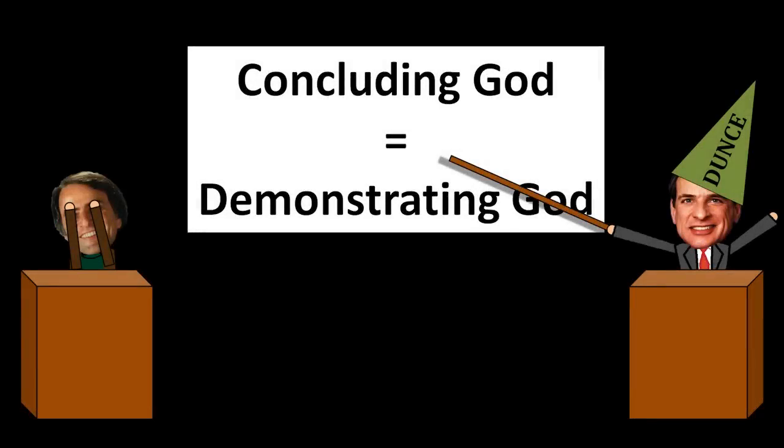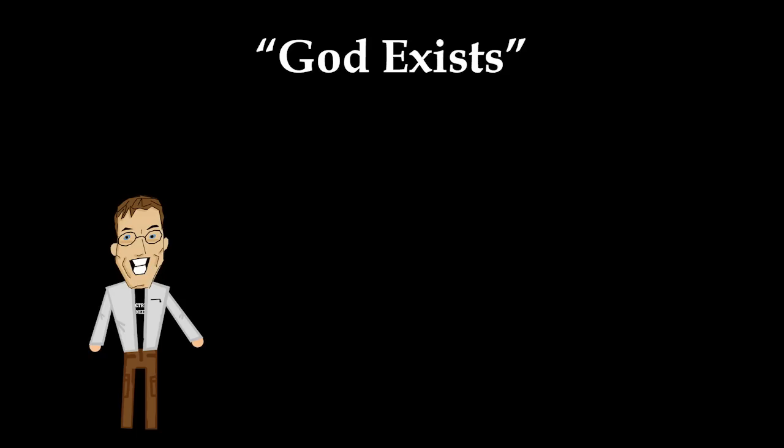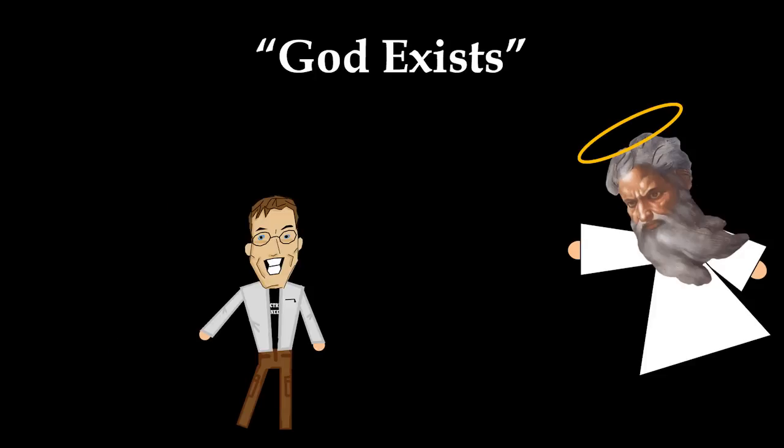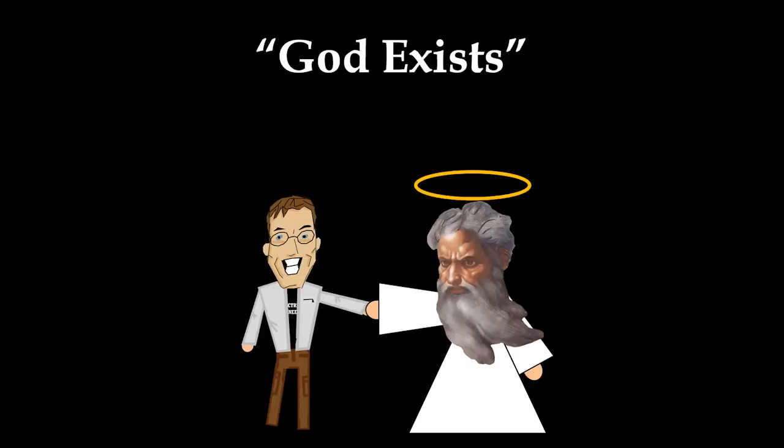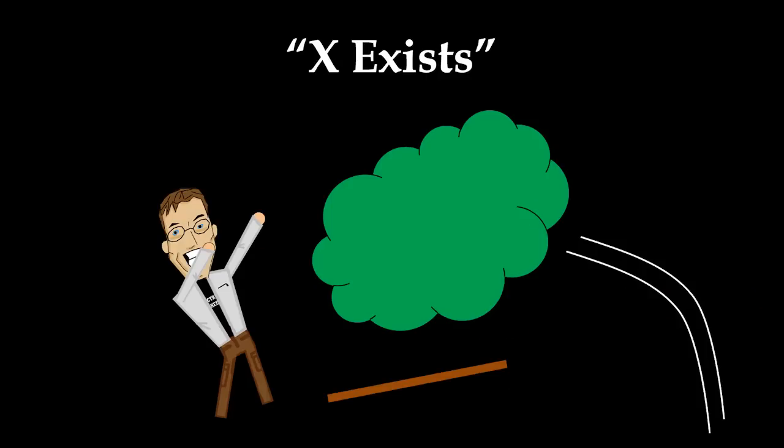This one simple principle is where Christian apologetics consistently fail more than anywhere else. Because the claim that something like God exists is literally a claim that somewhere, somehow, I can interact with it on a physical level and generate a predictable sensory experience. It's an assertion that if I poke a stick in the right corner, then something's going to poke back.